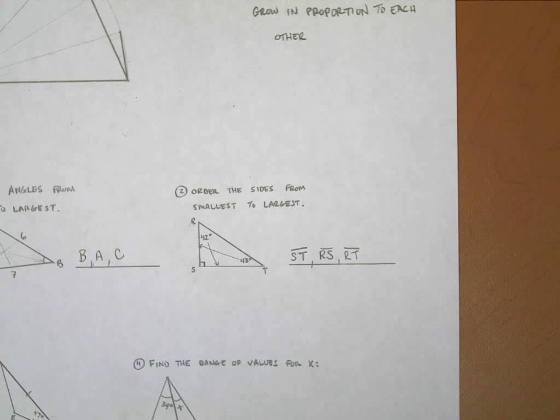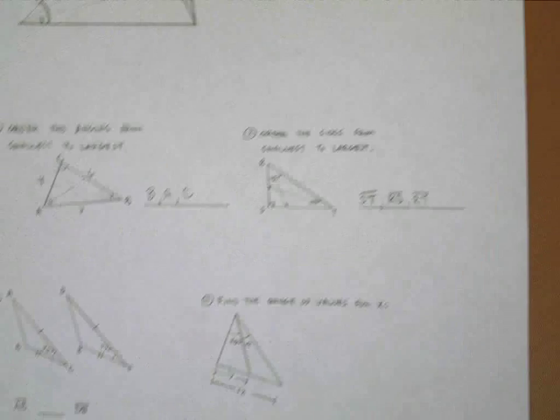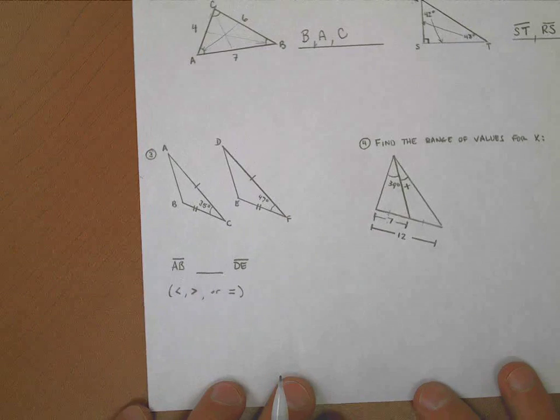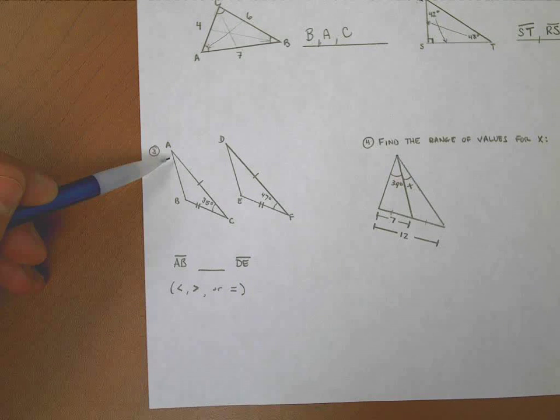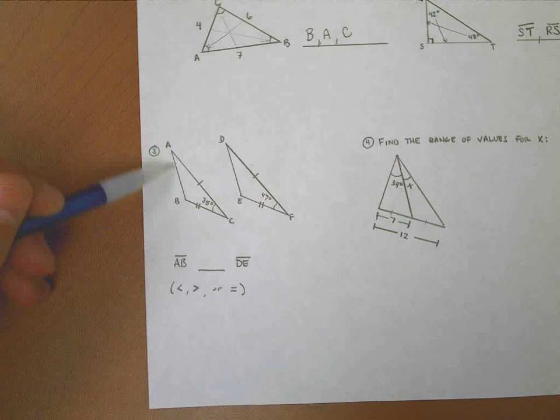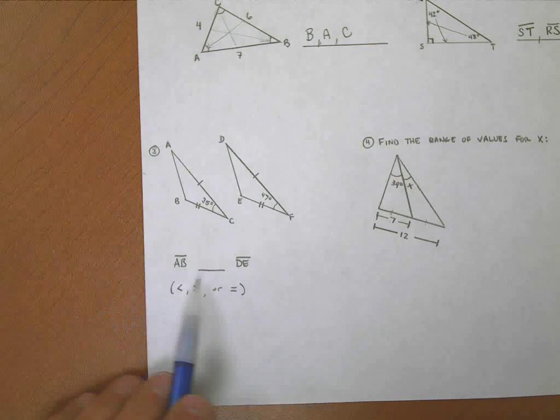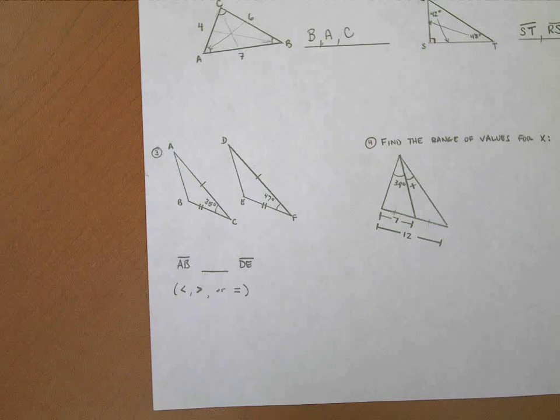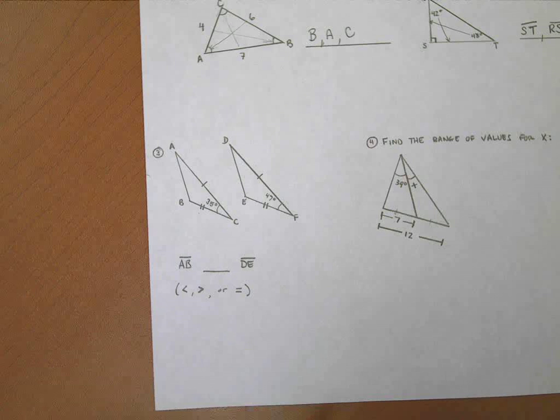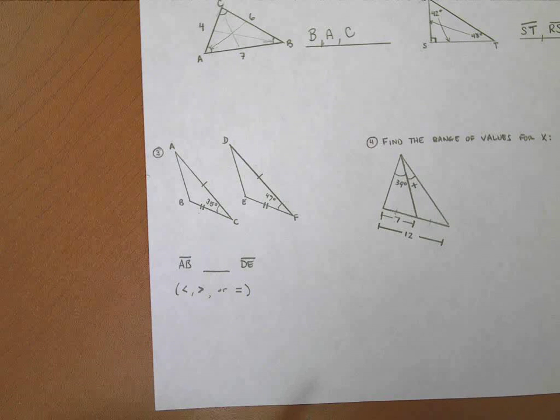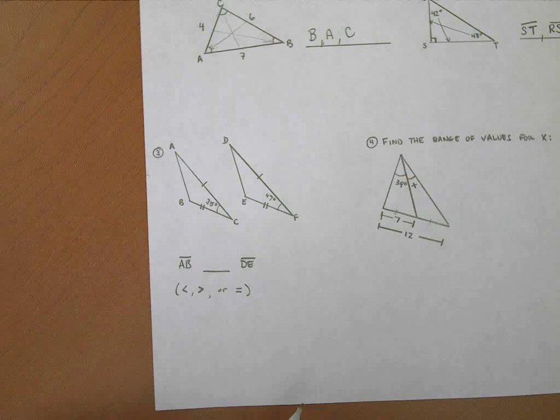Two more example problems. Sometimes you'll be asked to compare two side lengths. Here I have a diagram and they're asking me: if I compared the side AB to the side DE, which one's bigger? Is AB greater than, less than, or equal in length to side DE? Well, here's what I know: these two sides are the same and those two sides are the same. So really, the only thing that could possibly make a difference is how far apart those sides are from each other.